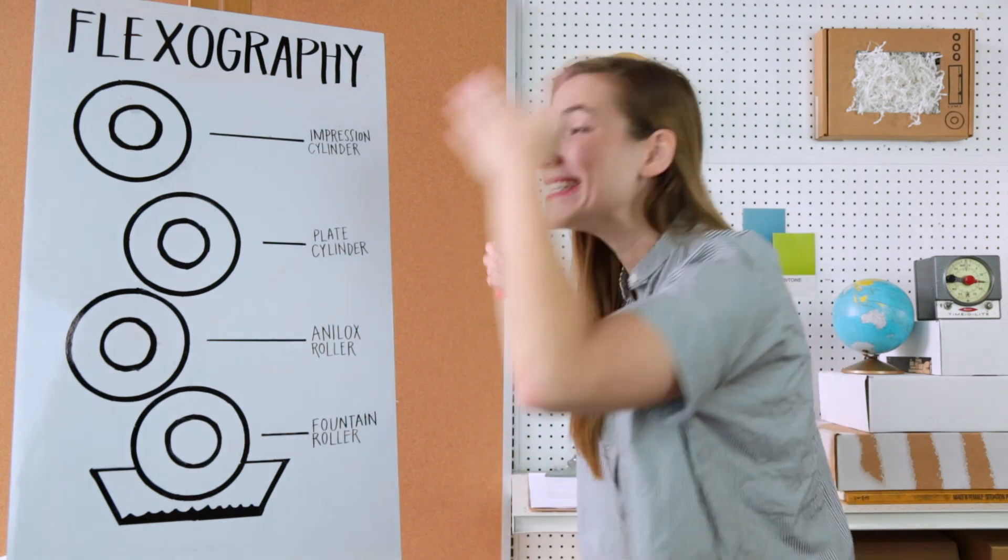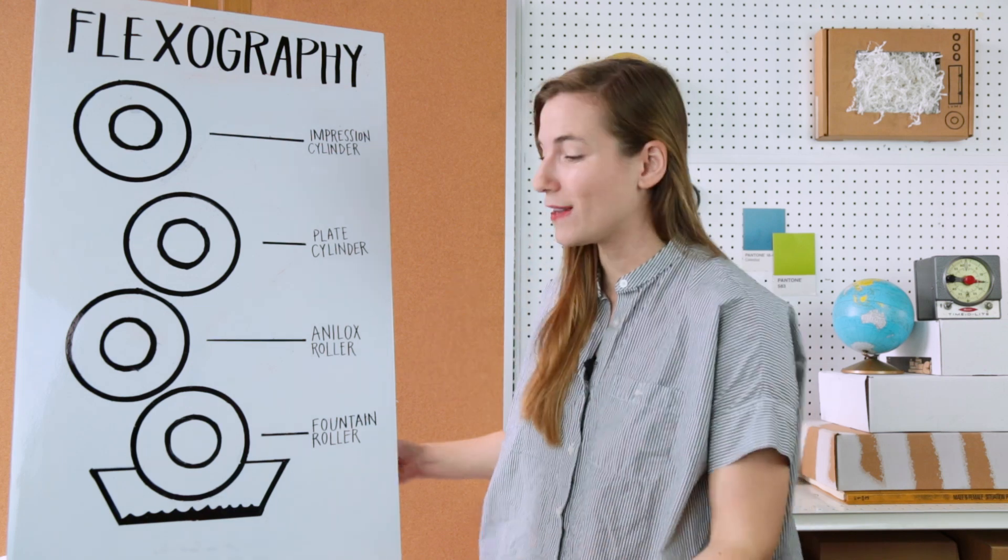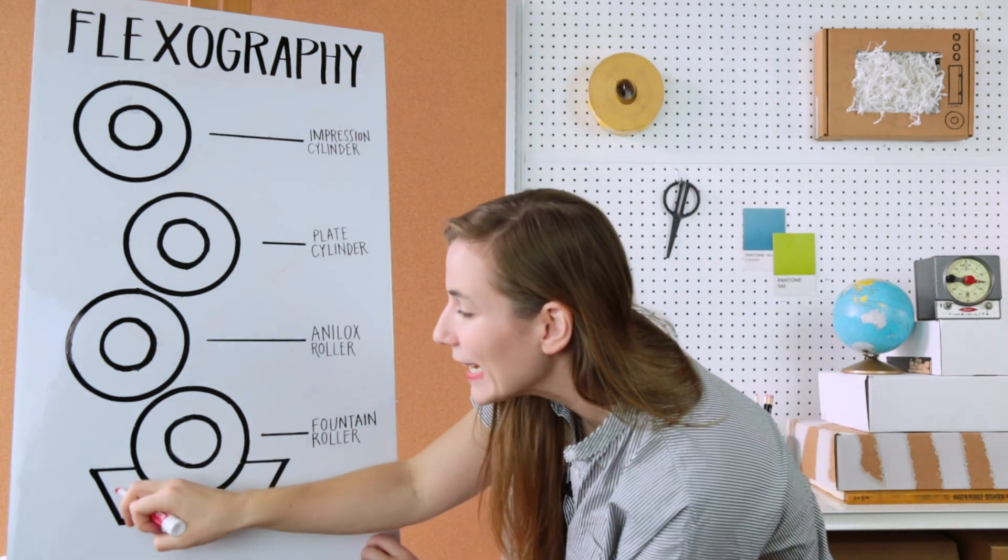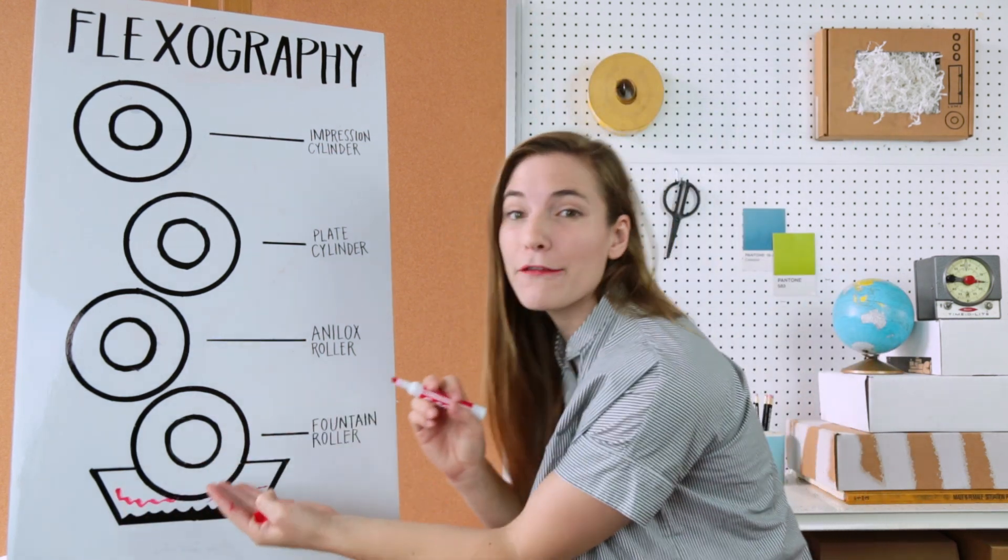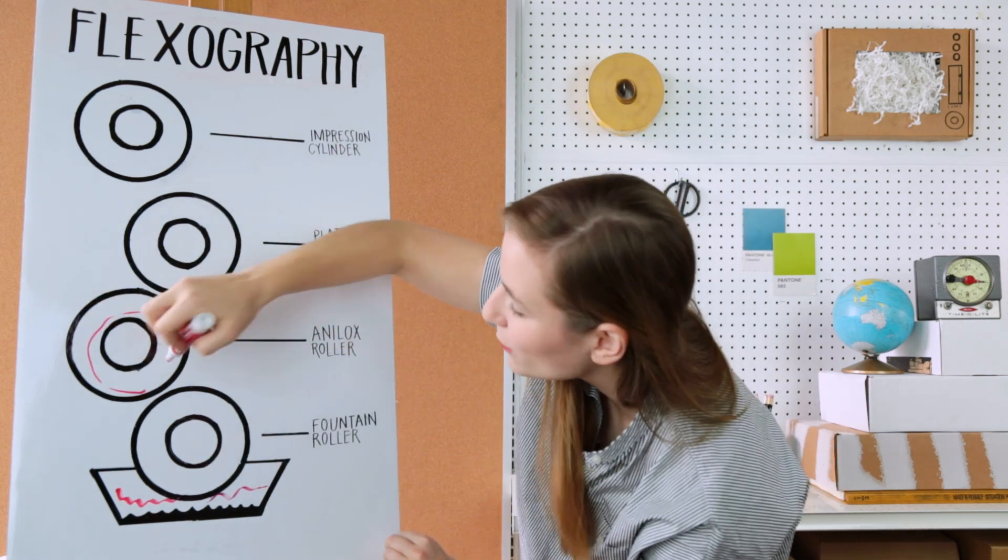Now I'm supposed to keep this quick, so let me dig in. There's four components of machinery that make this process possible. Down here, you've got your ink sitting in an inkwell, and the fountain roller picks up the ink and transfers it to the anilox roller.